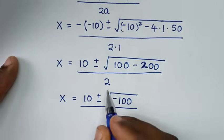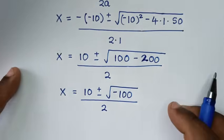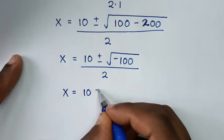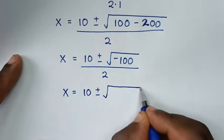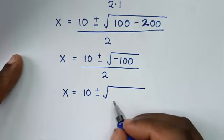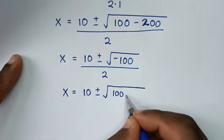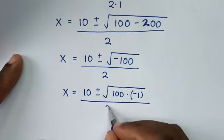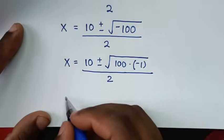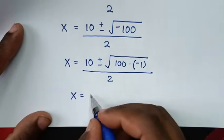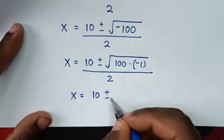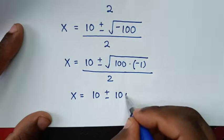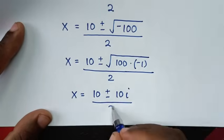Then x is equal to 10 plus or minus square root of negative 100, which is the same as square root of 100 times negative 1, over 2. The square root of 100 is 10, and the square root of negative 1 is i. So it becomes 10 plus or minus 10i, over 2.